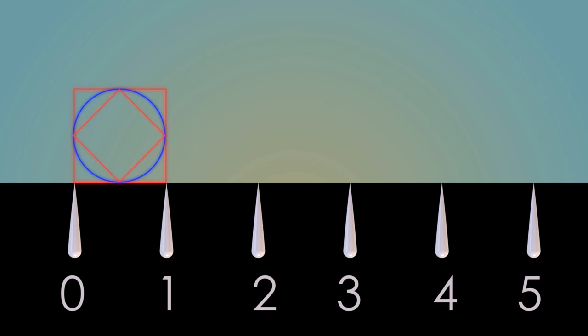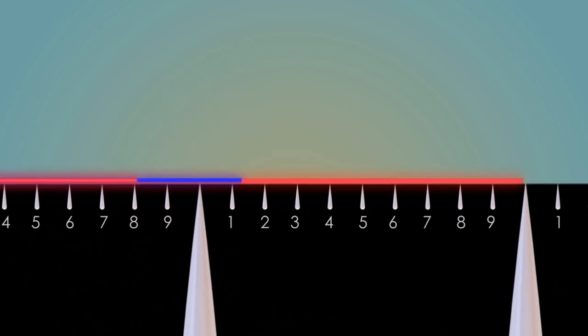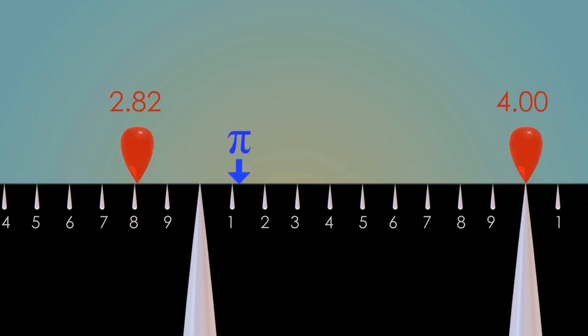If we unroll these on the number line, the big square will have the greatest perimeter, the small square will have the smallest perimeter, and pi, whatever it is, will be somewhere in between. We can use the Pythagorean theorem to figure out the perimeters of these squares, and it tells us that pi is a number somewhere between 2.82 and 4. It's not a very good estimate, but it's a start.